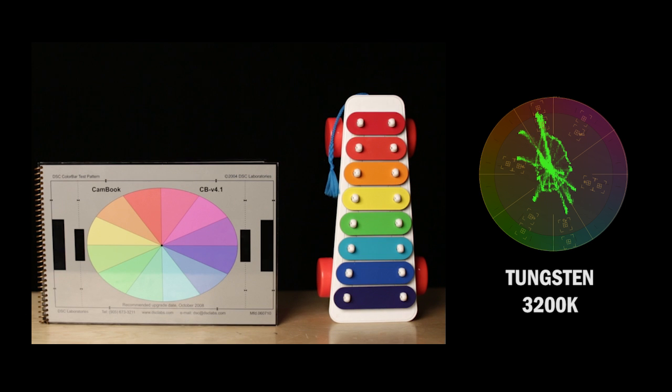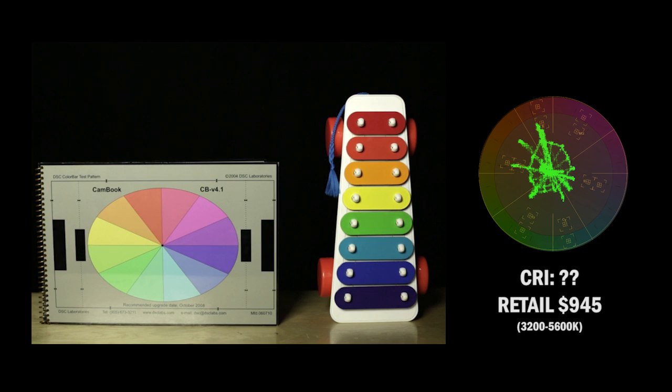Okay, so here's the tungsten light shot, and basically what we want to do is pay attention to the vector scope, which is showing you where all the colors of this shot are laying out, and let's go ahead and put it back-to-back with the unrated CRI light.